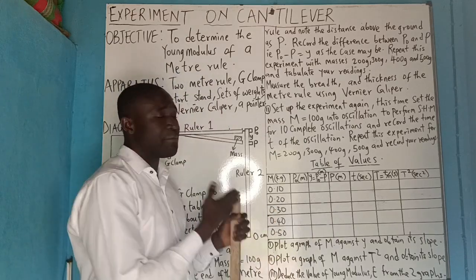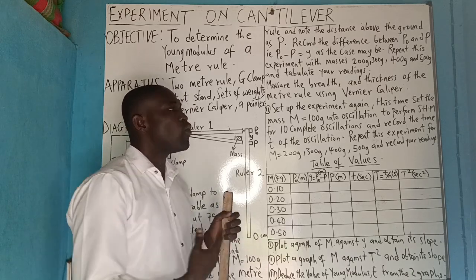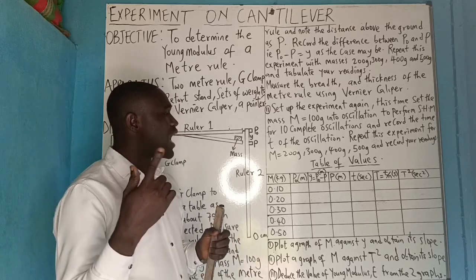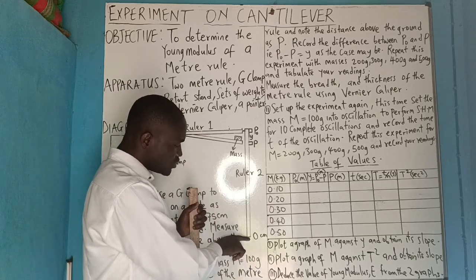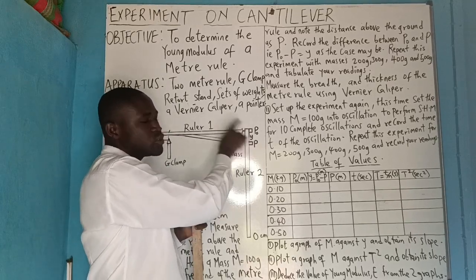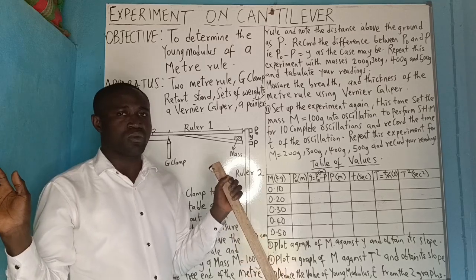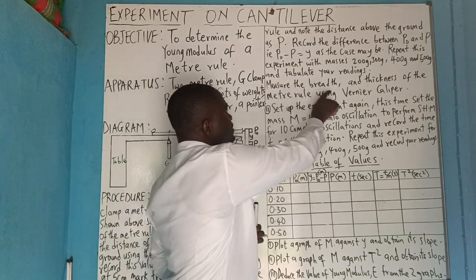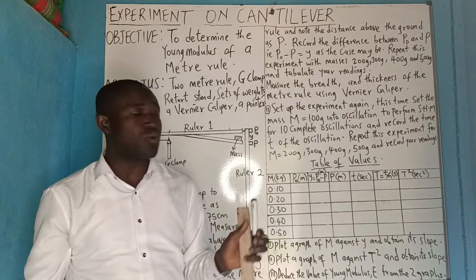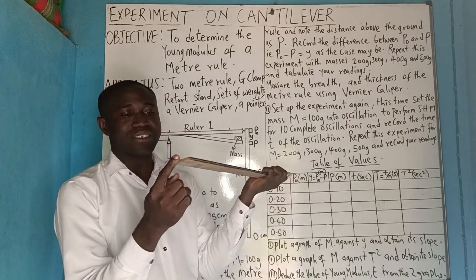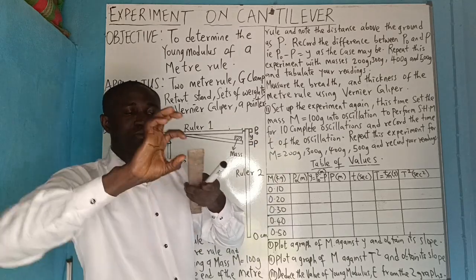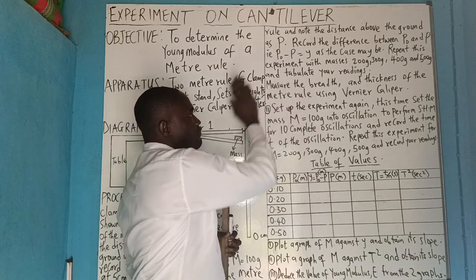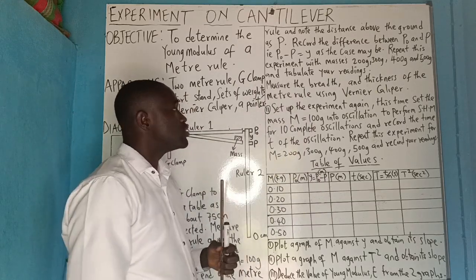The essence of this experiment is for us to see how to perform it without stressing ourselves setting up apparatus. The only thing needed is to measure from zero to Po and note it. Once you note your Po, the rest is sorted out. Also, measure the breadth and thickness of the meter rule using a Vernier caliper — breadth is the width, and thickness is from top to bottom.